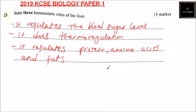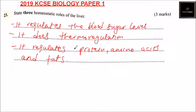Converting: when there is excess of one, it converts to glucose. When there is no more glucose, it converts to fats and amino acids. Those are the three homeostatic roles of the liver. You will be able to get three marks.